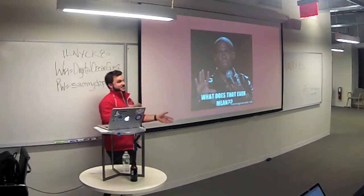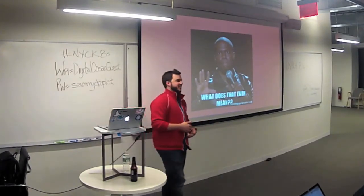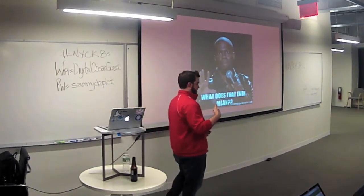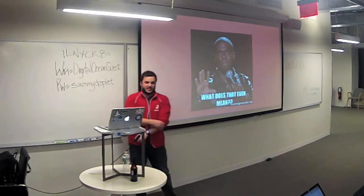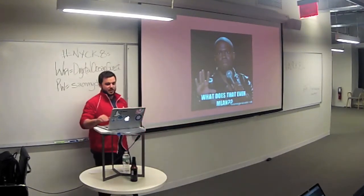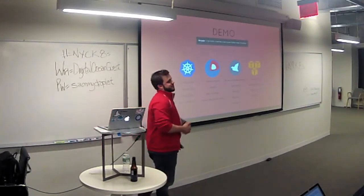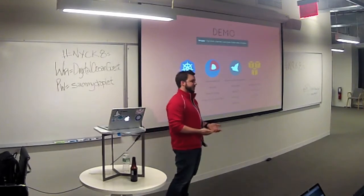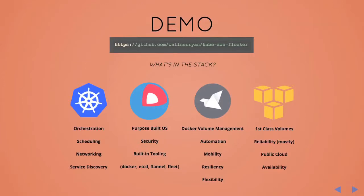What does this all actually mean? It can be a lot of information, and without getting into the actual layers of what Kubernetes is and what microservices are, it can be confusing. So part of what I want to do is jump into the demo so you can see what running an application in Kubernetes with a backend like Flocker actually looks like. It's all on GitHub if you want to follow along.